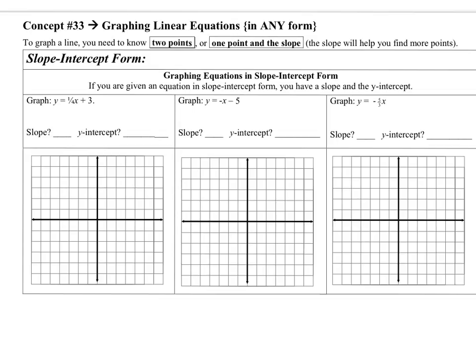Let's start first with slope-intercept form. Slope-intercept form, if I ask you for the form of that equation, is y equals mx plus b. That's the most common form of an equation. So real quick review of that — the first one is y equals one-fourth x plus three.